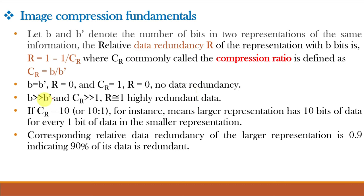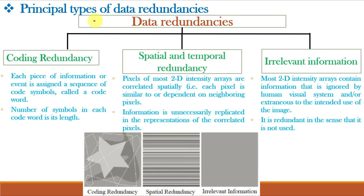If B is much greater than B', then CR is much greater than 1 and R is approximately equal to 1, or 100%, which shows that the data is highly redundant. If CR equals 10 (10:1), meaning B equals 10 bits and B' equals 1 bit, then R equals 1 - 1/10 = 1 - 0.1 = 0.9, indicating 90% redundancy.